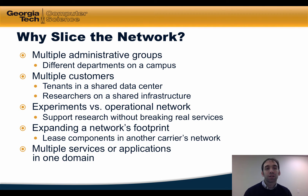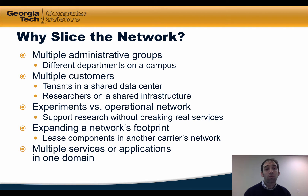There are various reasons you might want to slice the network. One is that the network might have multiple administrative groups, such as different departments on a campus. Another is that the network might have multiple customers, such as multiple tenants in a shared data center or researchers operating on a shared testbed infrastructure. Another reason is to separate experiments from the operational network so that research or experiments can be supported without breaking the real operational services.